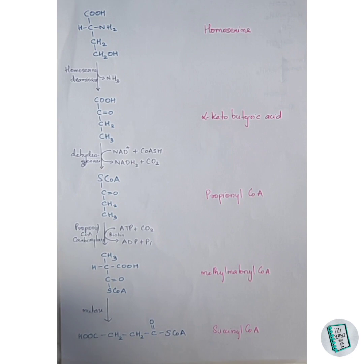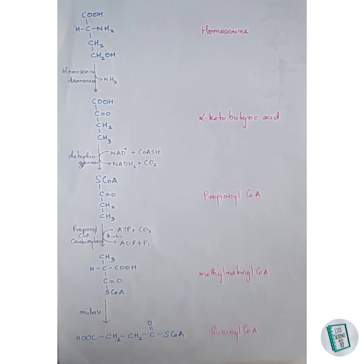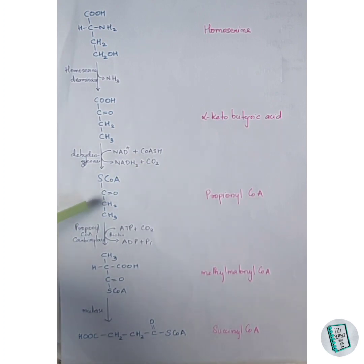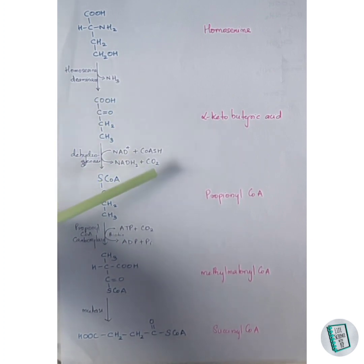Following deamination, the atoms rearrange to form alpha-ketobutyric acid. This alpha-ketobutyric acid then undergoes oxidative decarboxylation — removal of CO₂ and two hydrogens — to form propionyl-CoA. The CO₂ is removed, the two hydrogens together with the hydrogen from CoA-SH are accepted by NAD⁺ to form NADH₂, and the remaining S-CoA joins with the carbon to form propionyl-CoA.